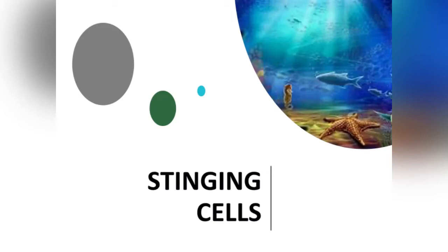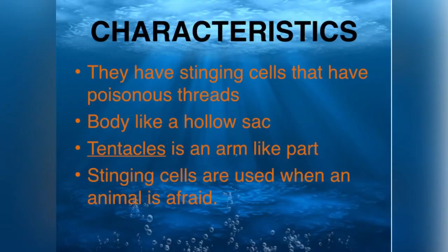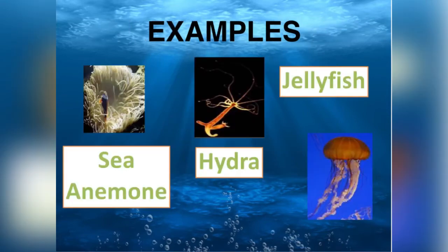Stinging cells — the features. They have stinging cells that have poisonous threads. Their body is like a hollow sock. Tentacles are like an arm, and stinging cells are used to catch food. Some examples include a hydra, sea anemone, and a jellyfish.